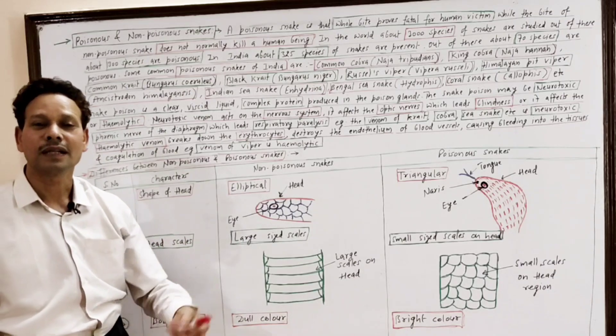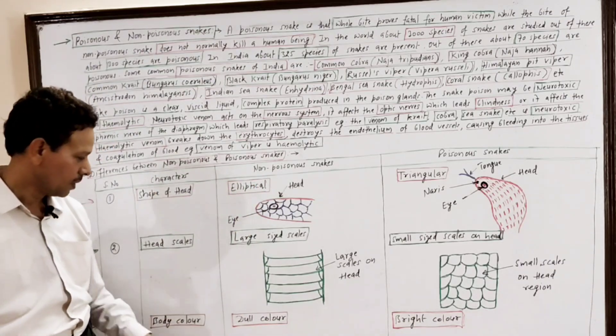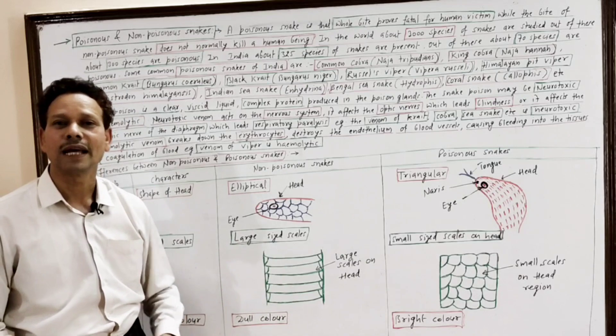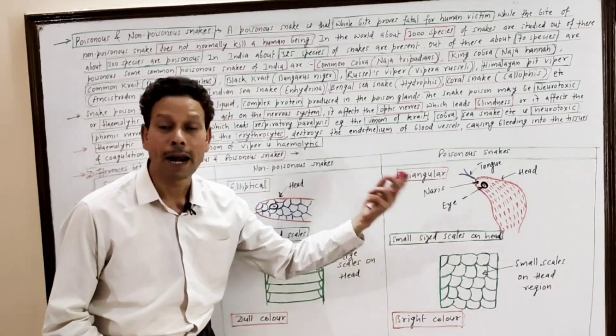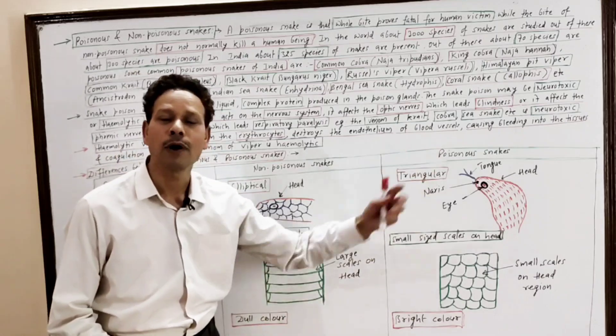Body color. The color of the snake. If it is dull color, then it is a non-poisonous snake. Warning color, bright color means the snake is poisonous.